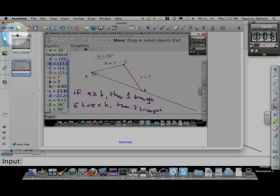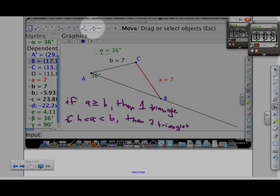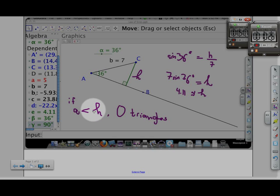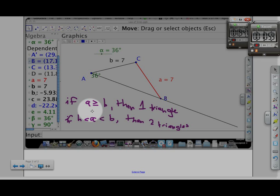So you see in here, in the first scenario, if A is less than H, then there is zero triangles. But not only that, if A is equal to H, then we have a right triangle. Then one triangle is possible. If A is greater than or equal to B, then one triangle. And if A is between H and B, then there are two triangles.